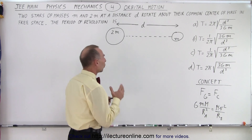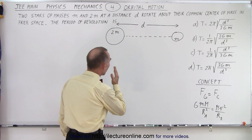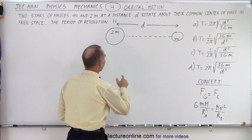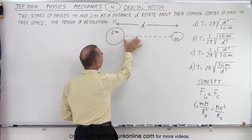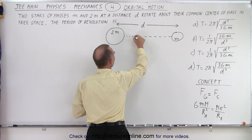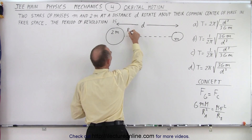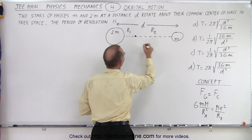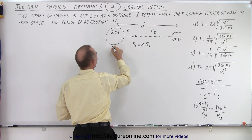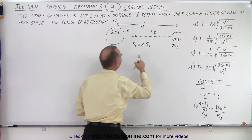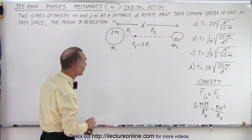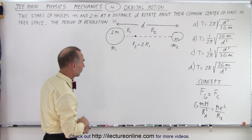Think about where the common center of rotation is. If you have twice the mass, the radius should be only half as big; if you have half the mass, the radius should be twice as big. So the center of mass would be about here. Let's call this distance r1 and this distance r2. In this case, r2 must be two times r1.